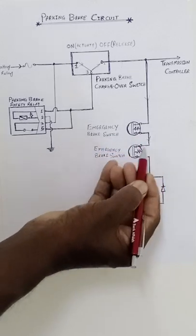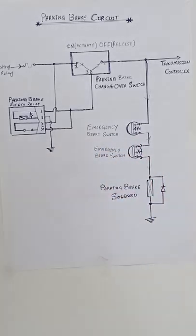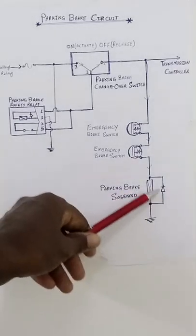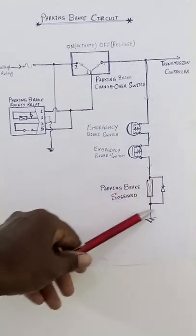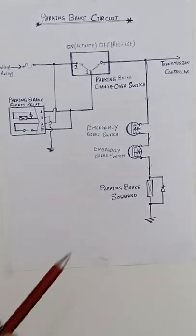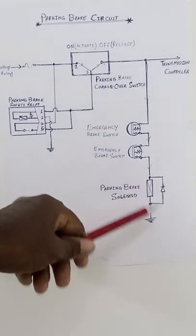from here to here, and this solenoid is energized. When this solenoid is energized, our brake is released.